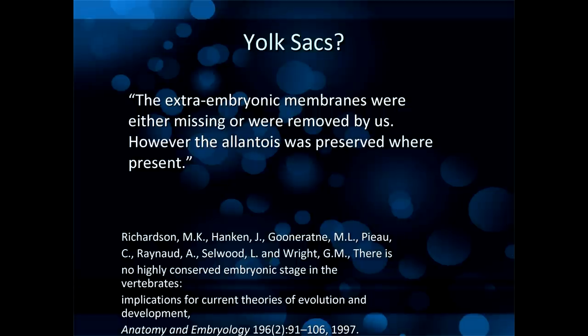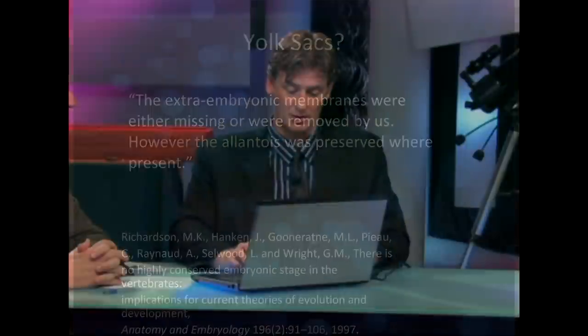Richardson himself is an evolutionist — why would he manipulate the photos? If you actually look at Richardson's original paper, the embryologist's team stated: 'The extra-embryonic membranes were either missing or were removed by us. However, the allantois was preserved where present.' This team of biologists was careful with the extra-embryonic materials. Contrary to what the historian says, the bulge of the salamander is part of and attached to the body of the embryo, unlike the human embryo where the yolk sac is outside. In many species it would be impossible to separate the yolk from the body without misrepresenting the structure. So, exactly contrary to what Richards says, these photos are accurate.